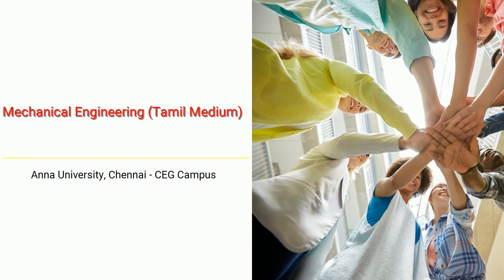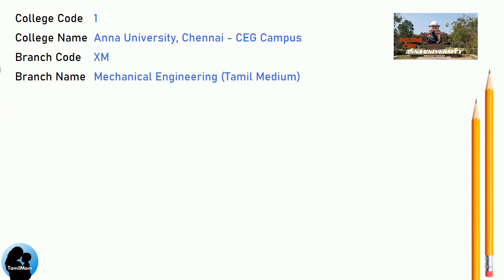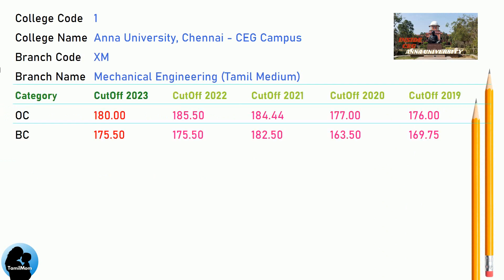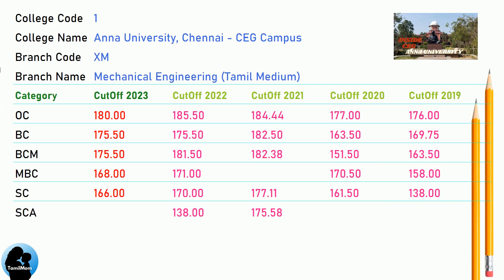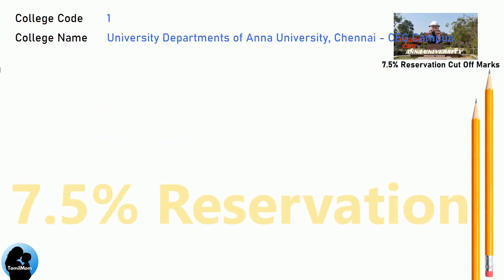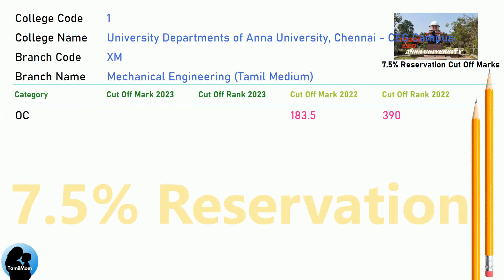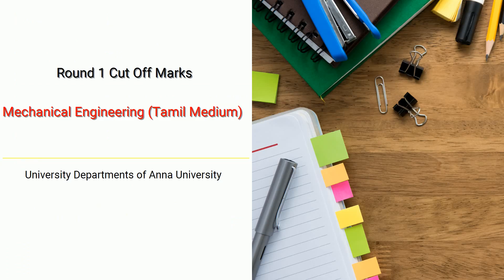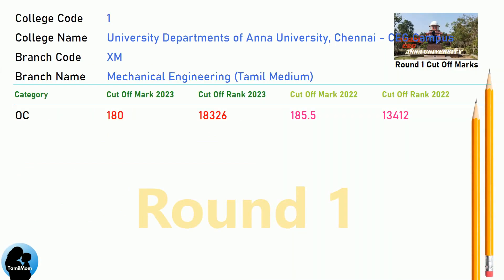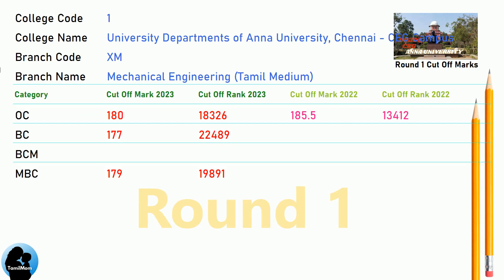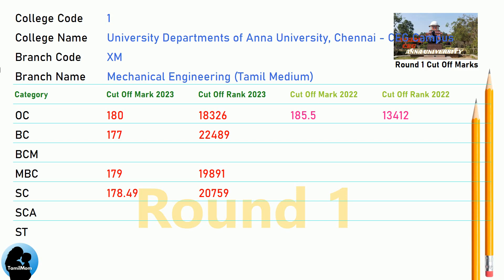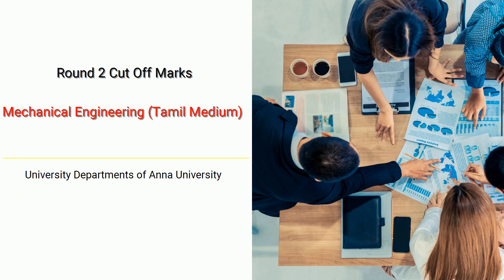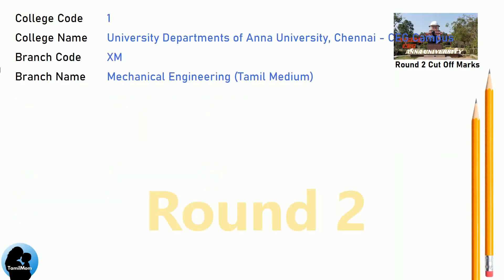DNA Cut-Off for Anna University Chennai CEG Campus in Mechanical Engineering, Tamil Medium. DNA 7.5 Reservation Cut-Off for Anna University Chennai CEG Campus in Mechanical Engineering, Tamil Medium. DNA Round 1 Cut-Off for Anna University Chennai CEG Campus in Mechanical Engineering, Tamil Medium. DNA Round 2 Cut-Off for Anna University Chennai CEG Campus in Mechanical Engineering, Tamil Medium.